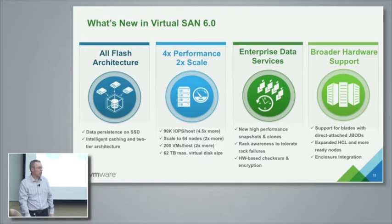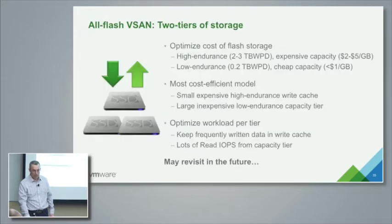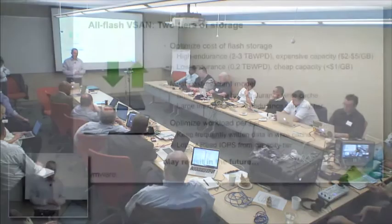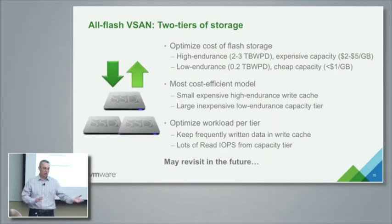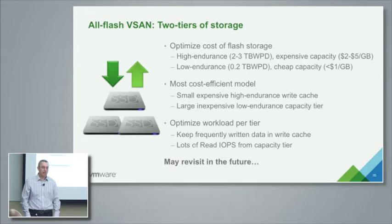Are we still limited to 32 all-flash nodes or is it up to 64? It is up to 64. And both architectures — hybrid and flash — it's the same for both. All the object scalability limits are the same across both architectures. We're still limited to one SSD per disk group.